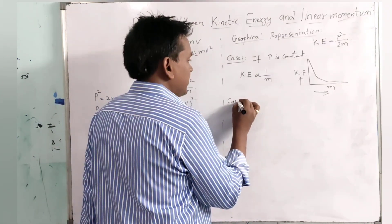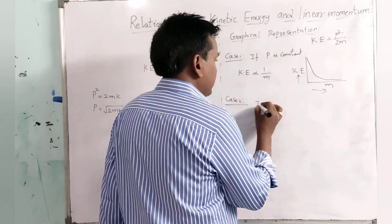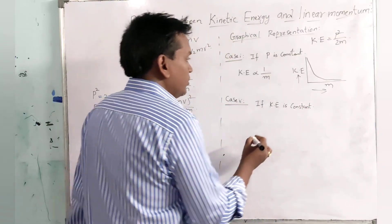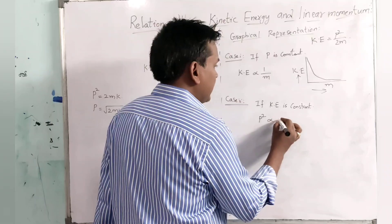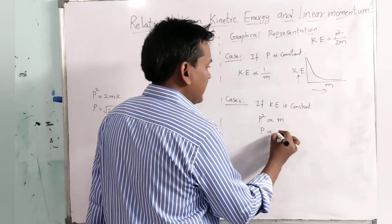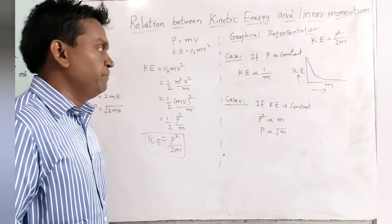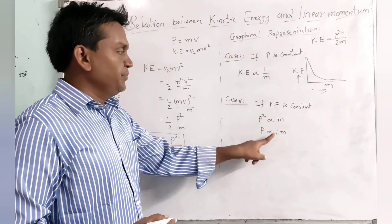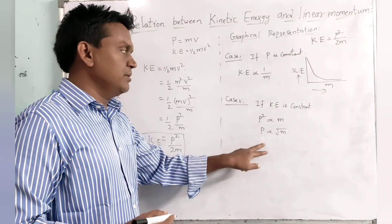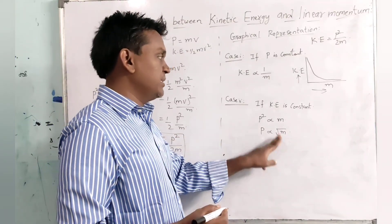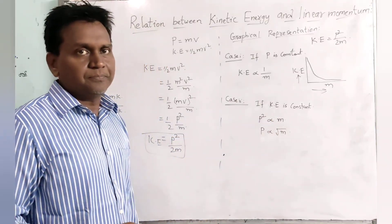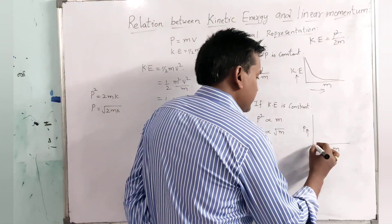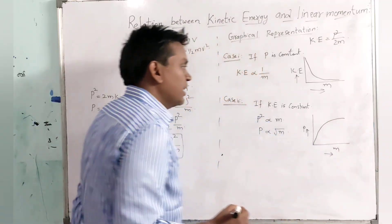Case 2: if kinetic energy is constant, then P squared will be directly proportional to mass, or P will be directly proportional to root of mass. That means both are directly proportional to each other. As kinetic energy is constant, if mass increases, momentum also will increase along with the mass. The mass and momentum graph will show this direct proportional relationship.